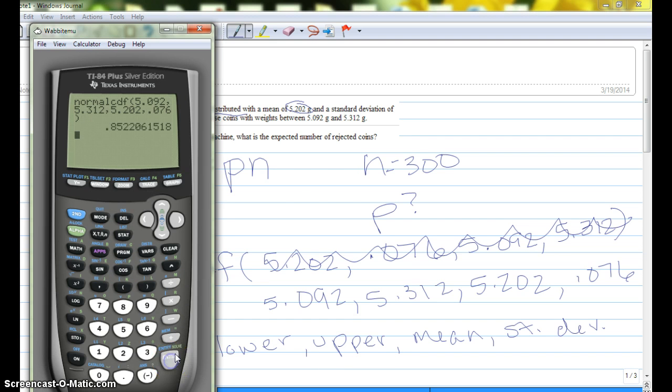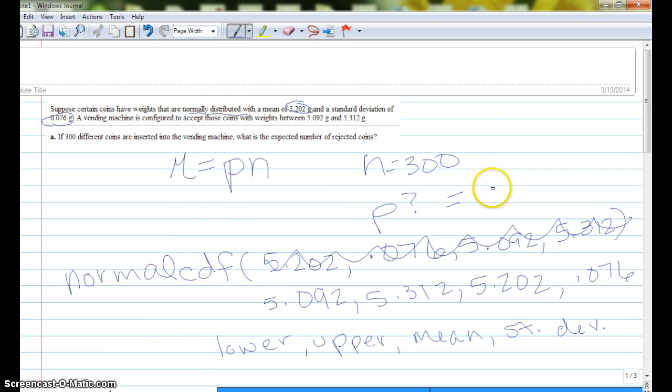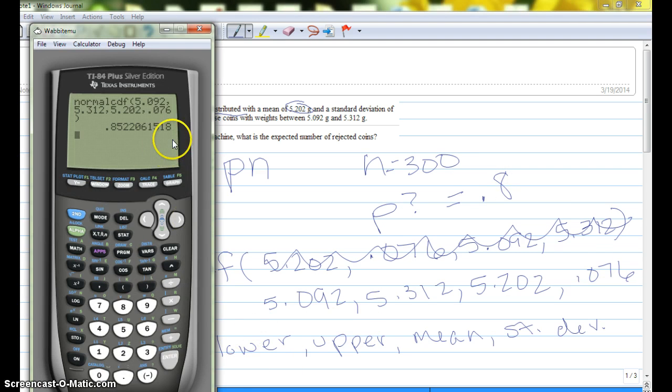So then we'll hit enter, and there we get our probability. So our probability of any one coin being between those two limits is, let's get four decimal points, you can actually just keep it there, but it's about 0.8522.